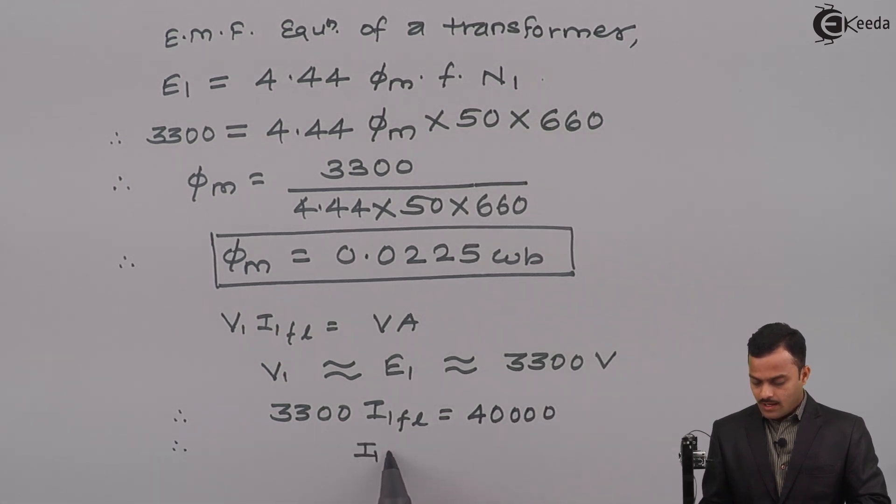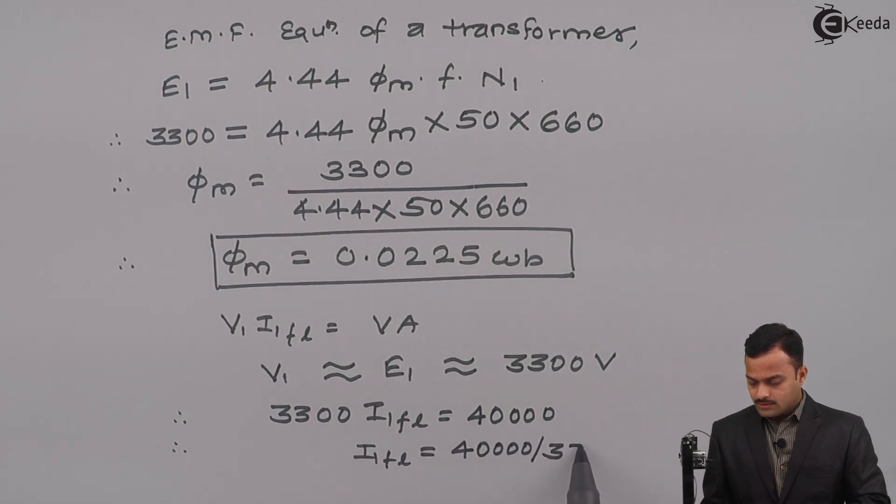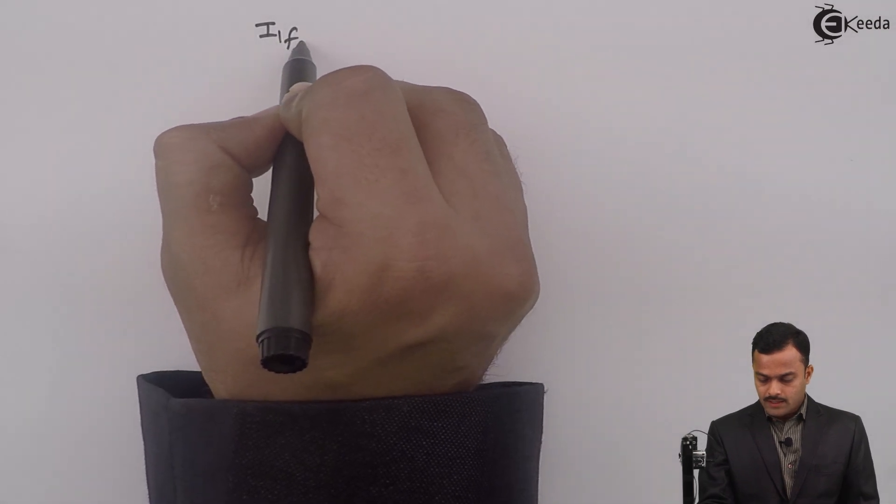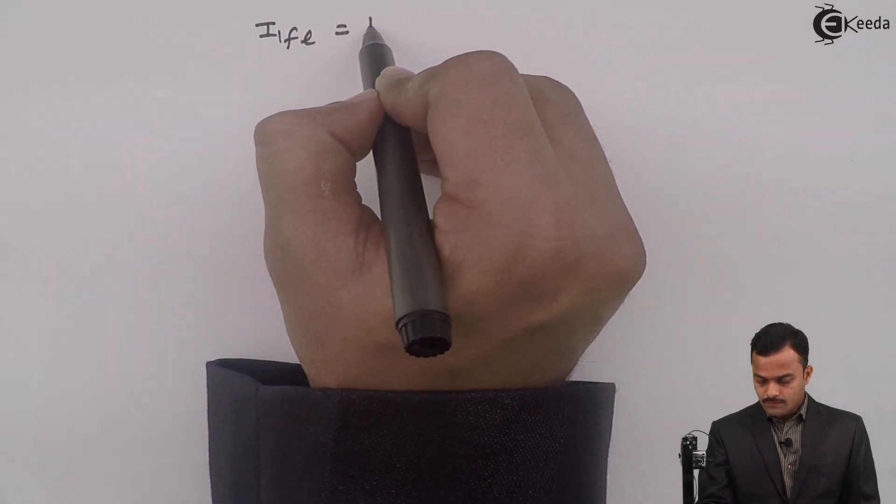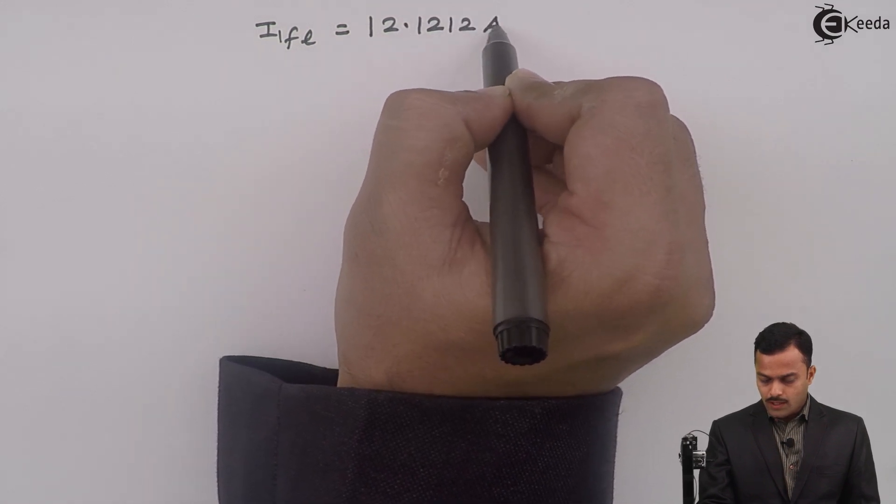So if you solve, you will get I1 FL equal to 40,000 divided by 3300. So solution to this equation will give you full load primary current I1 FL equal to 12.1212 ampere.